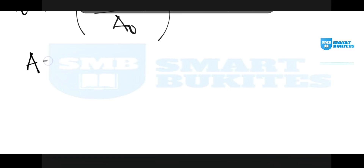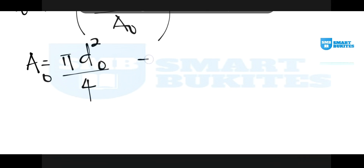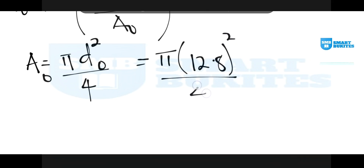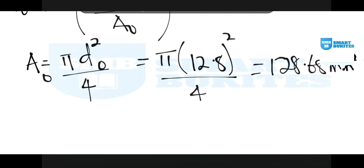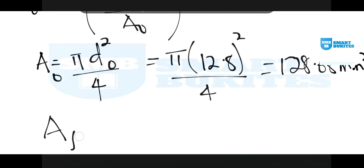For a cylinder, the area is equal to π d² over 4. So the original area is equal to π times the original diameter squared over 4, which gives π × (12.8)² / 4, equaling 128.68 mm².